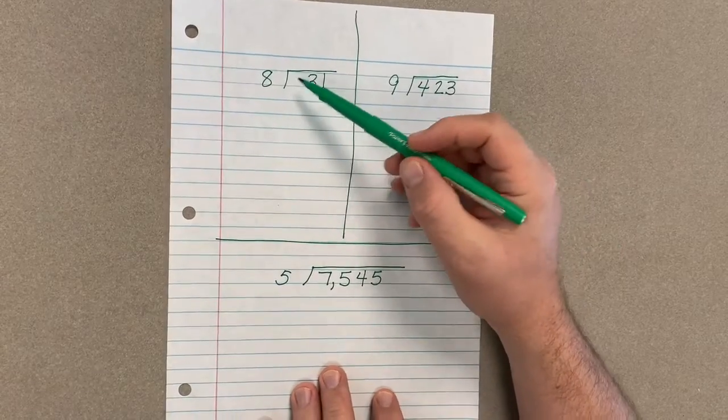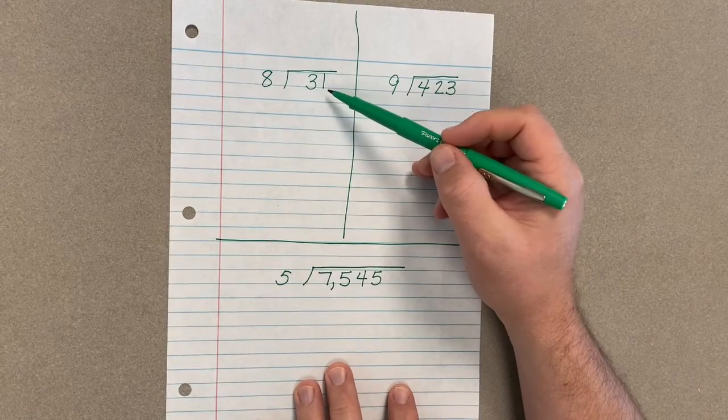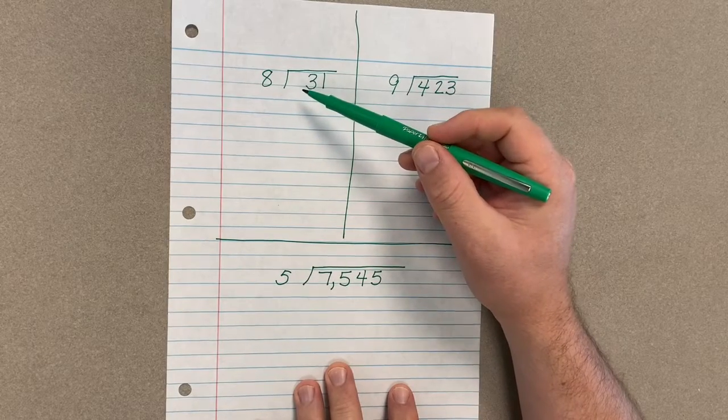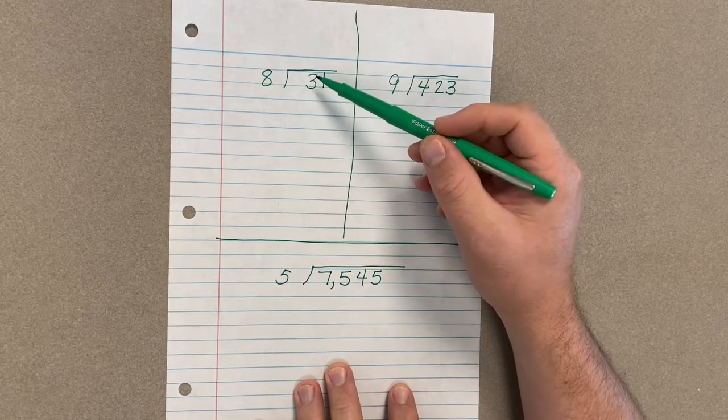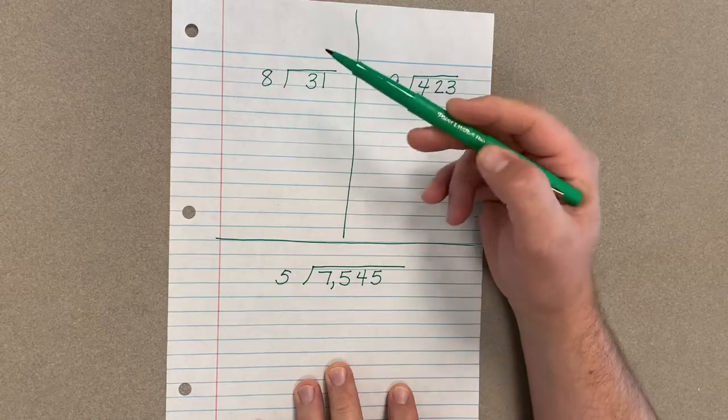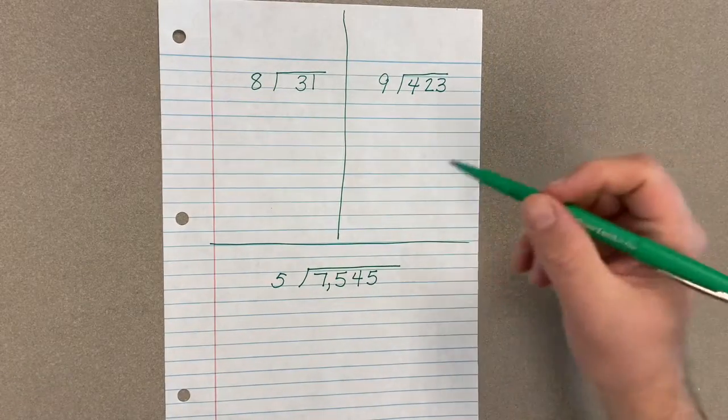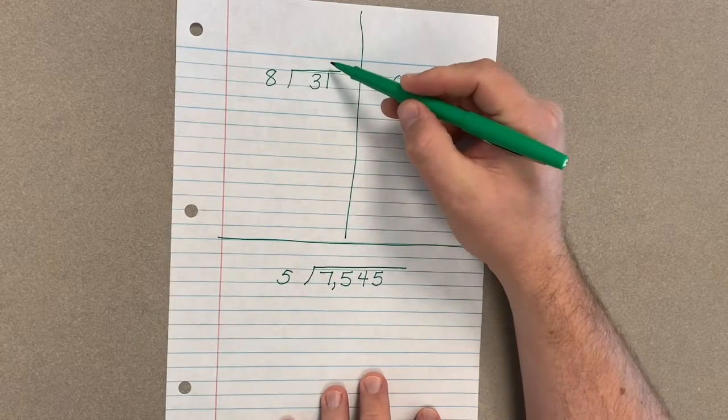For our first question here we've got 31, that's going to be our dividend. This is our big group that we're going to break into equal size pieces. We're going to break it into eight equal pieces, or equal pieces of eight, whichever way you want to think of that.